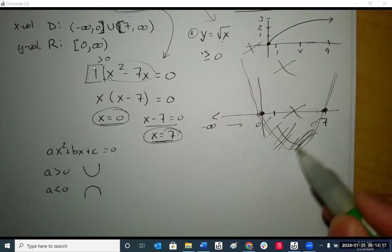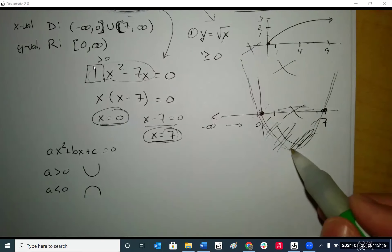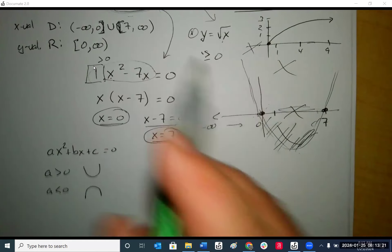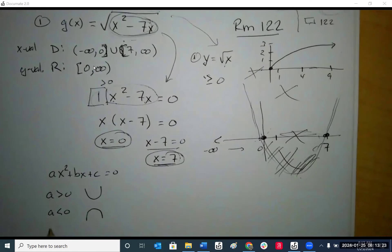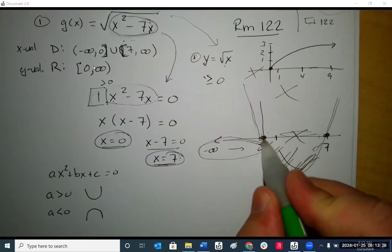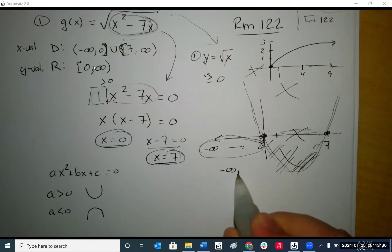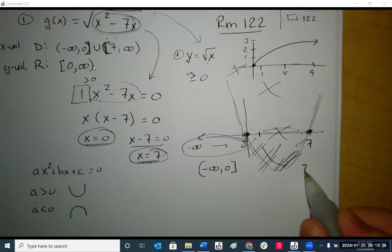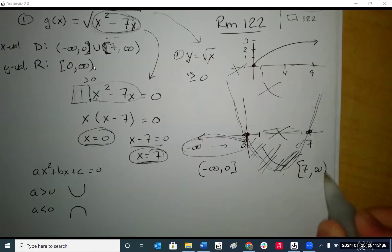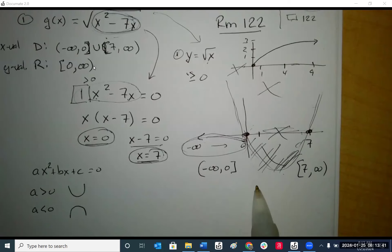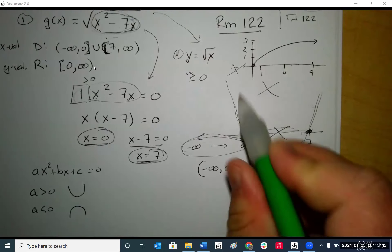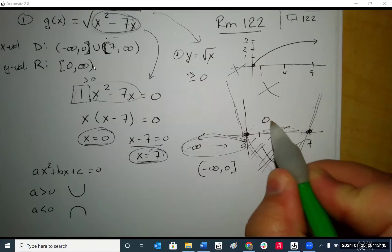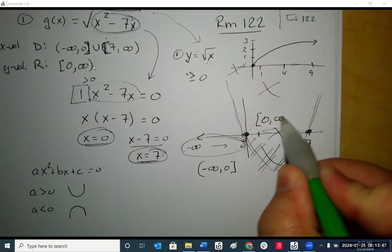We cannot use any x that gives us a negative solution because you cannot have a negative inside a radical. So our domain is from negative infinity to zero — we can include zero — and then from seven going to infinity. That's our domain. For the range, it starts at zero and goes to infinity.